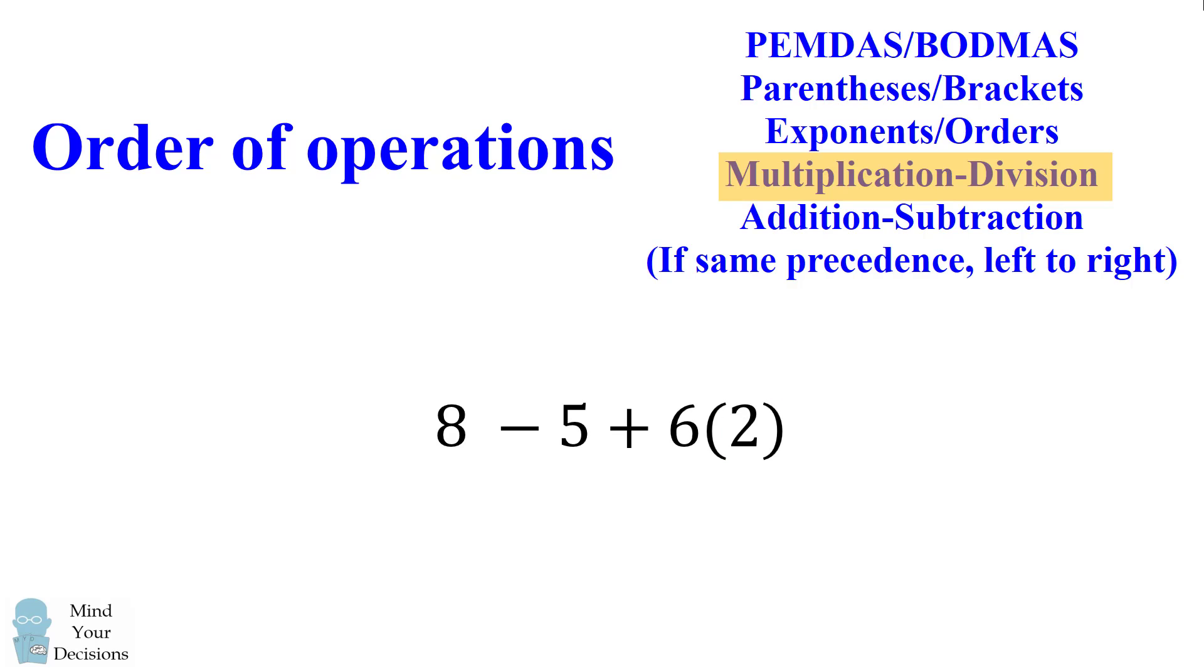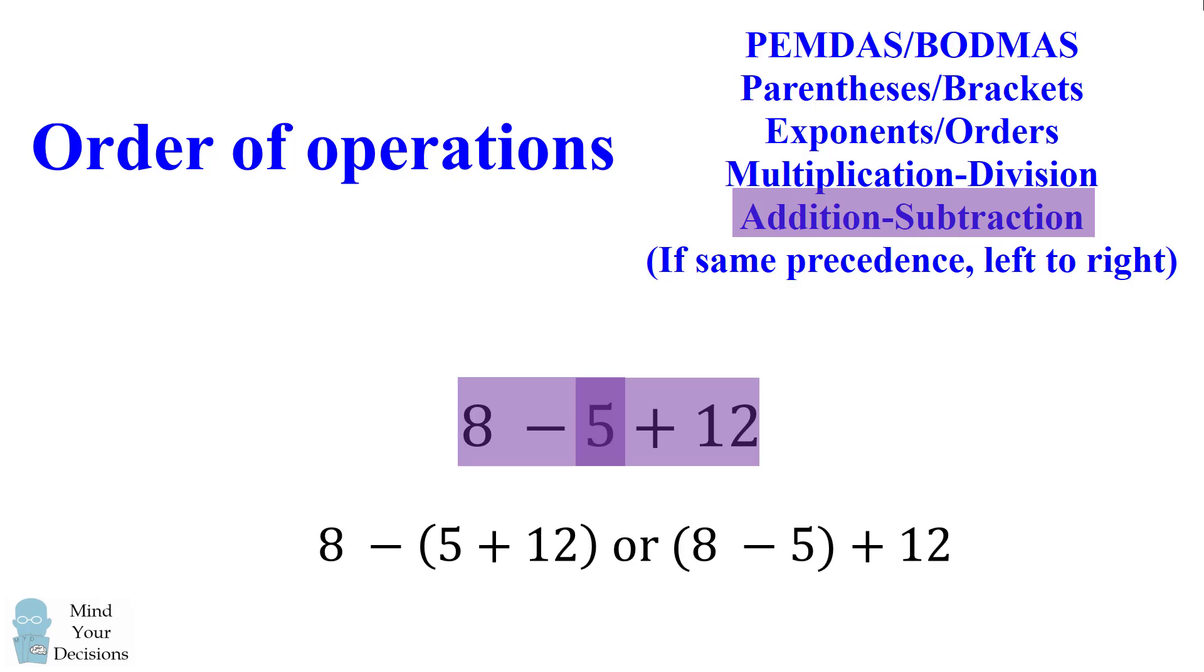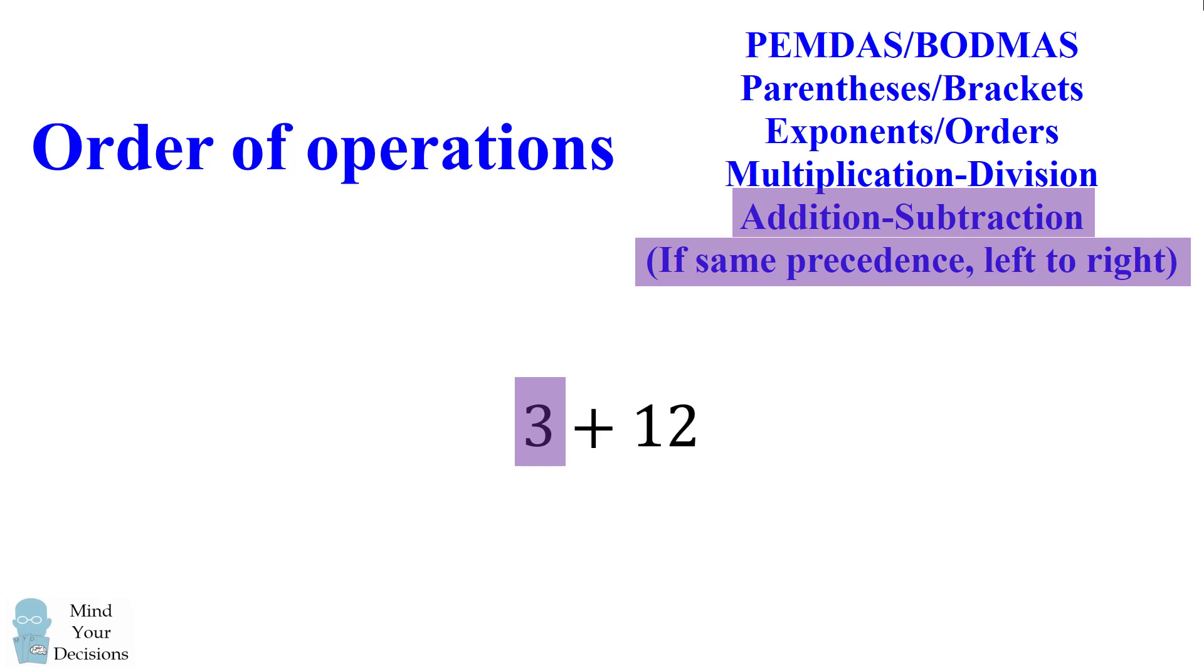Now we have a multiplication that we need to evaluate first. This is 6 times 2, which is equal to 12. Finally, we have a subtraction and an addition. We have 8 minus 5, and we have 5 plus 12. Some people are not sure whether to do the addition or the subtraction first. This is where the rule that if you have operations of the same precedence, you can evaluate them from left to right. So we'll take the left operation first. 8 minus 5 is equal to 3, and then we have 3 plus 12, which is equal to 15.